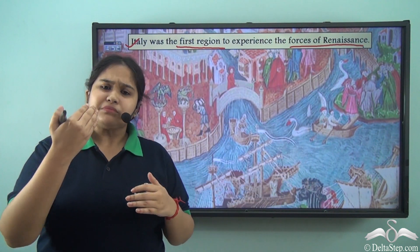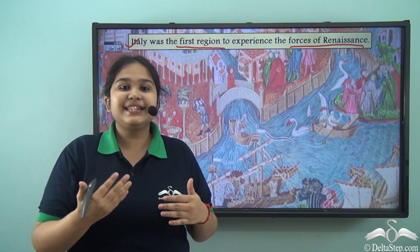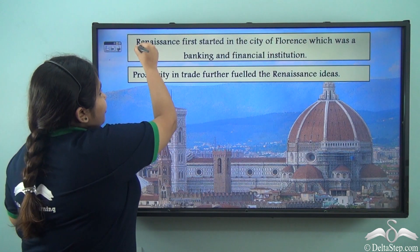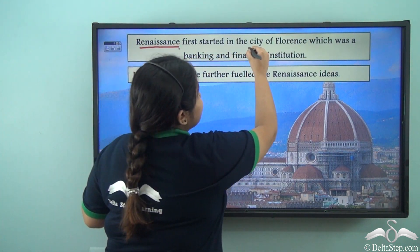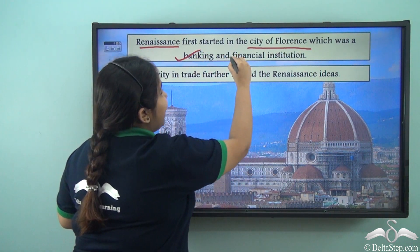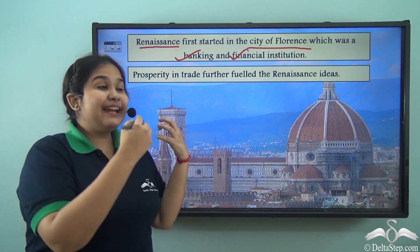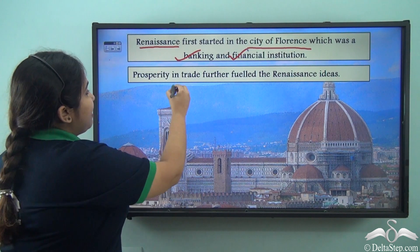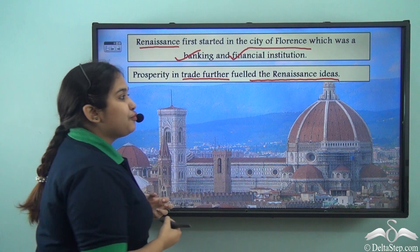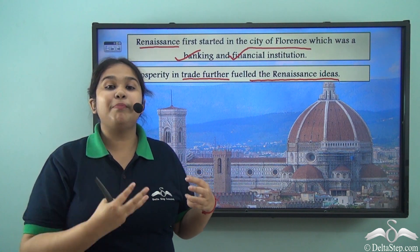These people required economic support to establish themselves. The Renaissance was first started in the city of Florence in Italy, which was a banking and financial institution. Trading made the Medicis very wealthy, and prosperity in trade further fueled the Renaissance ideas. Because if these ideas need to grow, they would require commerce to support them.